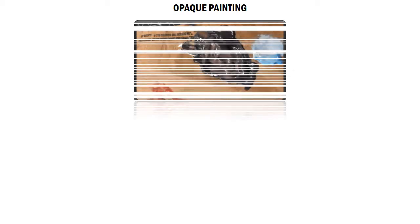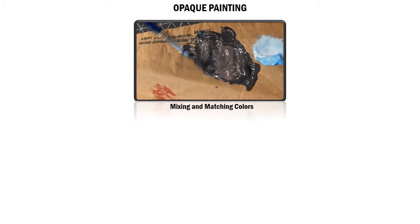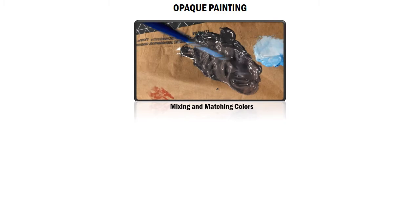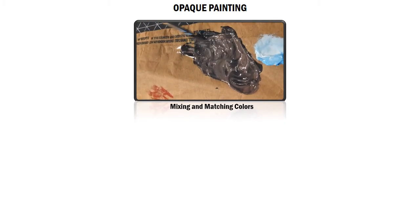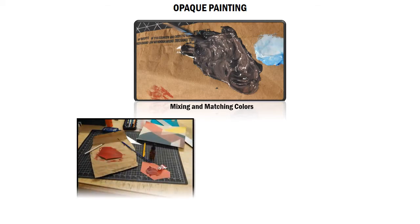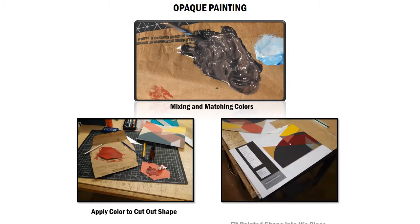Our first assignment on this work was to practice our color mixing abilities using gouache paint to create an opaque painting model of Composition 18. Using only the primary red, blue, and yellow, I mixed different combinations to match the colors seen. I then cut out the shapes seen in the painting and painted those with the best match color. Once dried, I placed them to the best of my ability in their proper locations.